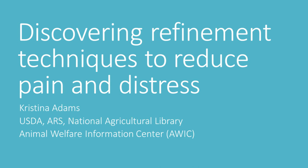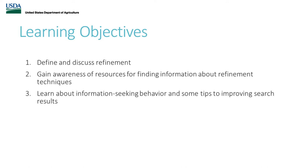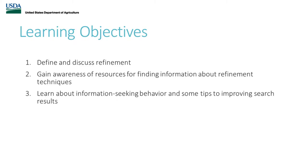We're all here talking about social housing, which is a refinement — especially if you have species who aren't living socially but are social species. I want to talk about some other refinements too. This is my experiences. I'd like to cover refinement, look at the definition in a broader sense, go through some resources — focusing on ones that are free and available anytime — and then give you some tips for conducting searches.